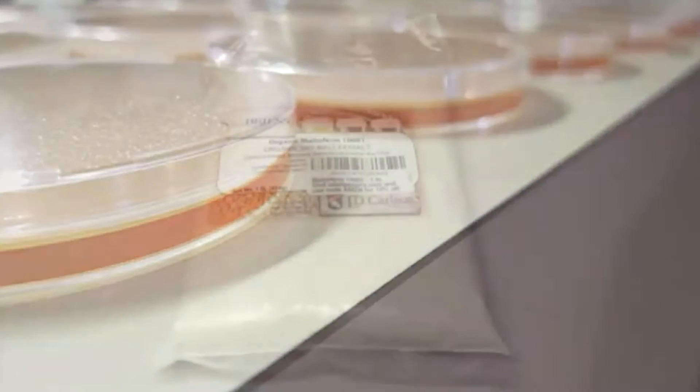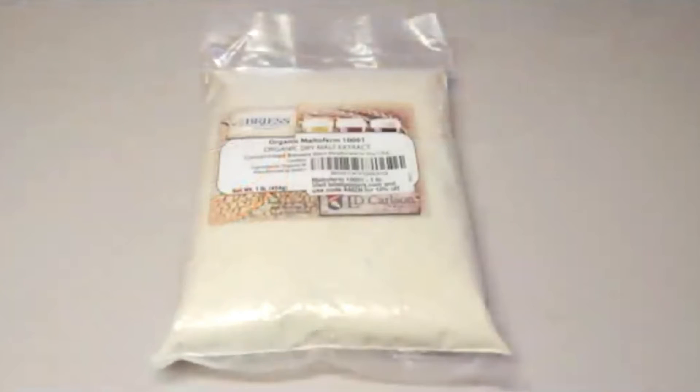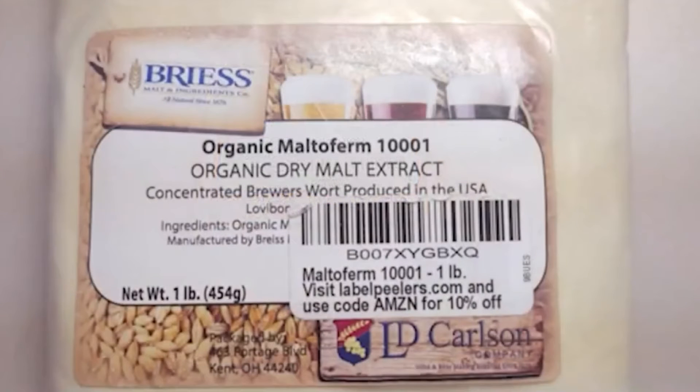There seems to be some confusion around malt extract and light malt extract. There are various malt extracts including light, amber, extra light, pilsen, wheat, rye, and even dark extracts which are used for brewing various styles of beer. All indicators show that any malt extract will work, but it seems that light malt extract is preferred in mycology. The malt extract we use and that is shown in our videos is actually a light malt extract.